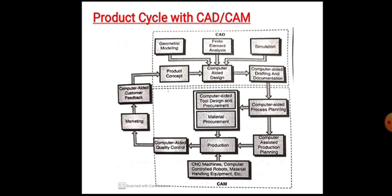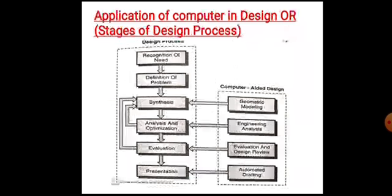Step 7 is computer-aided quality control, where computers are used for inspection and performance testing of the product and its components. Step 8 is computer-aided marketing, where computers are used in marketing the product. Step 9 is computer-aided customer feedback, where online customer feedback is collected using computers. Finally, CAD/CAM has led to greater integration of design and manufacturing.